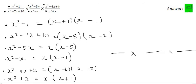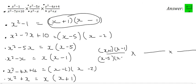And so the x squared minus 1 - we said that becomes x plus 1, x minus 1. So I'm going to say x plus 1, x minus 1. The x squared minus 7x plus 10 is just going to be x minus 5, x minus 2. Then the x squared minus 5x was x and x minus 5. And then the x squared minus x is x and x minus 1. The x squared minus 4x plus 4 just became x minus 2 and another x minus 2. And then the x squared plus x just became x and x plus 1.